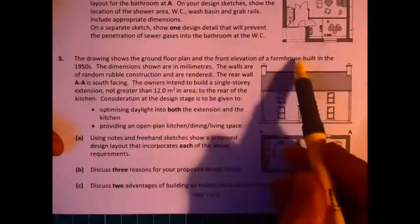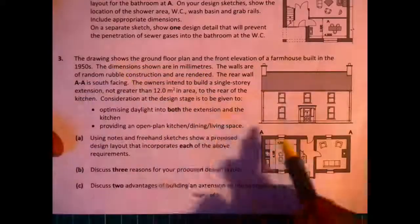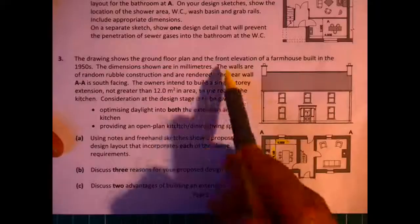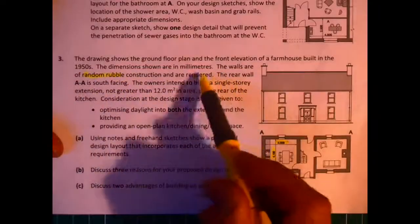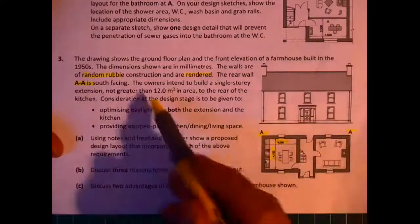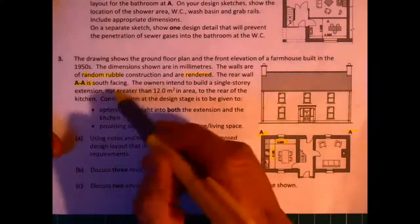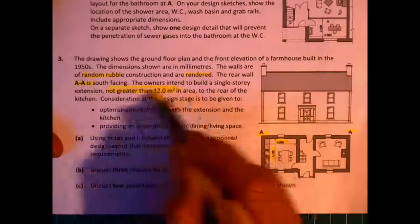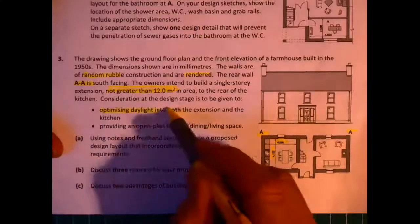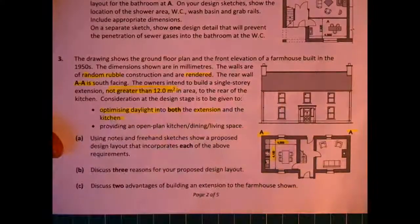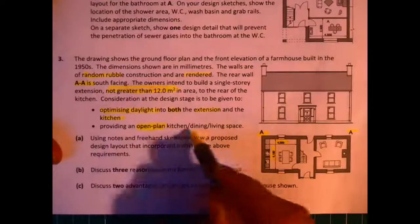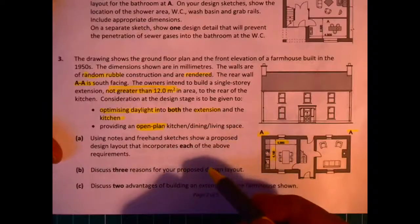In the question here it gives us information about a farmhouse built in the 50s with random rubble wall, with dimensions of roughly 4 meters by 4 meters. We're told that the rear of the house with the AA section is facing south and they intend to build an extension which is not going to exceed 12 meters, so that's 3 by 4. The other things we're looking at here is optimizing the daylight both into the extension and the kitchen and we're told to provide an open plan for the kitchen dining living space.